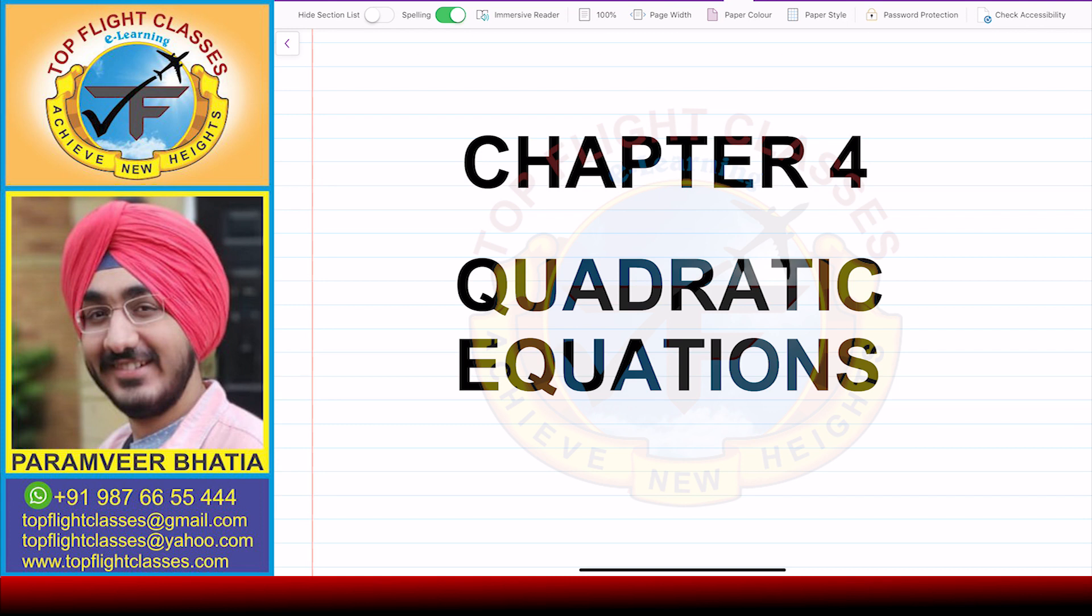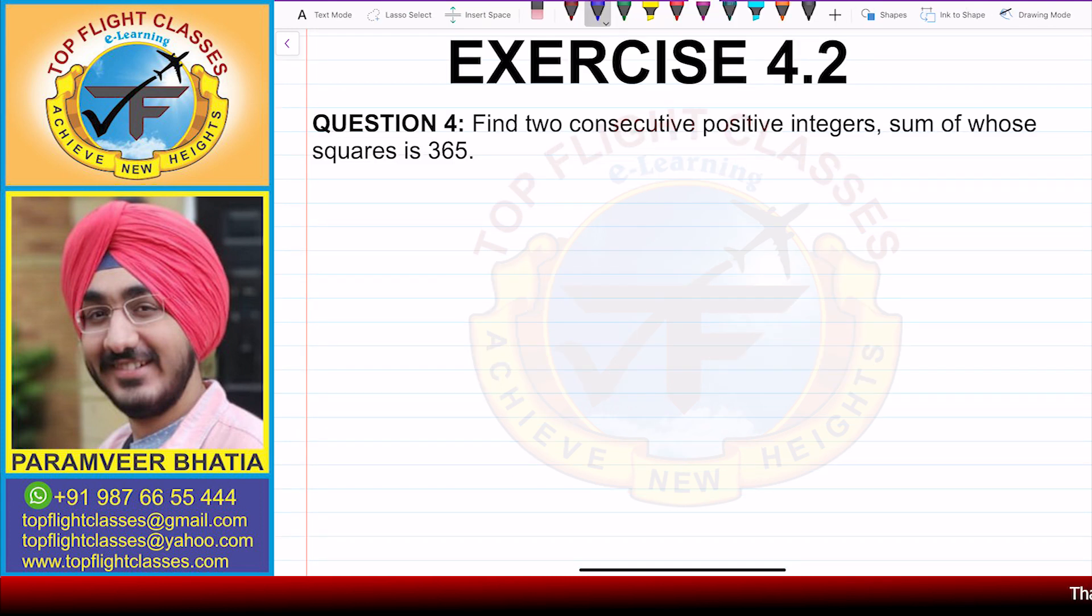Hey guys, welcome to my channel Top Flight Classes. In this video, we will solve question number 4 of exercise 4.2. Now question number 4 says, find two consecutive positive integers, sum of whose squares is 365.